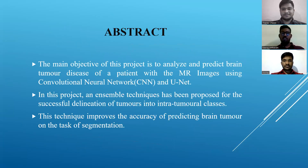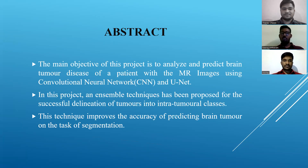Here is our abstract. The main objective of this project is to analyze and predict brain tumors of a patient using MRI images with a Convolutional Neural Network and U-Net algorithm. The main idea of this project is to improve the accuracy and prediction of brain tumor detection by using the task of image segmentation.